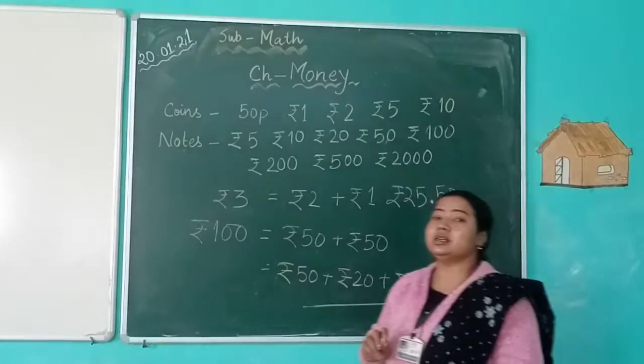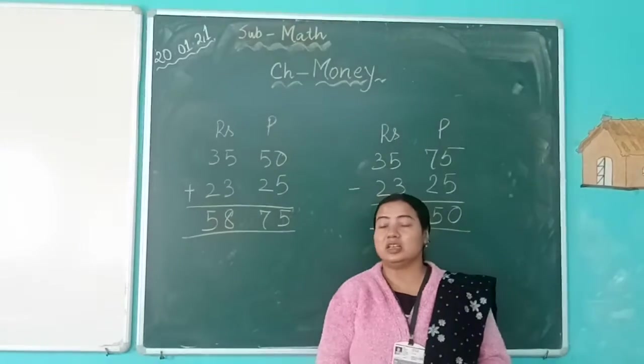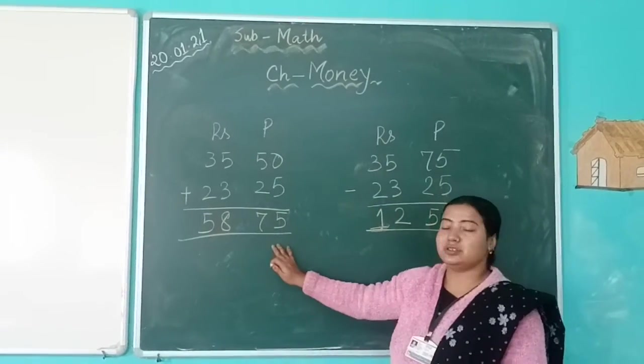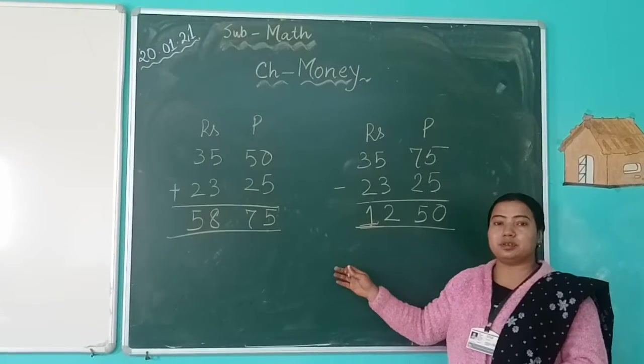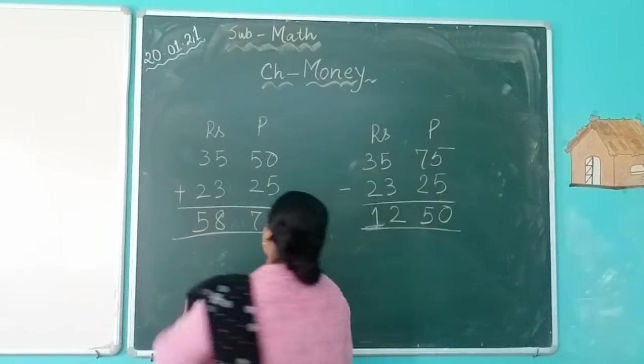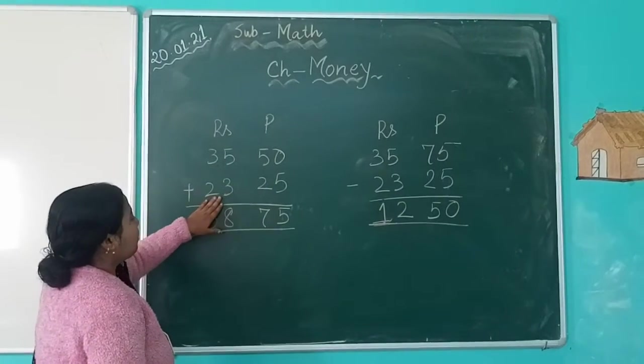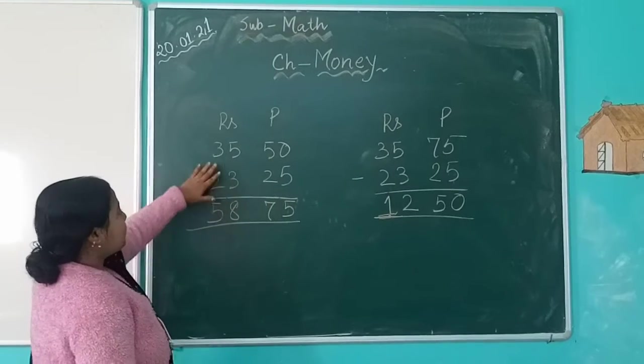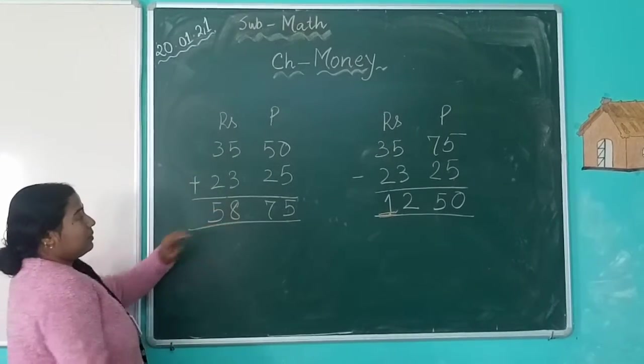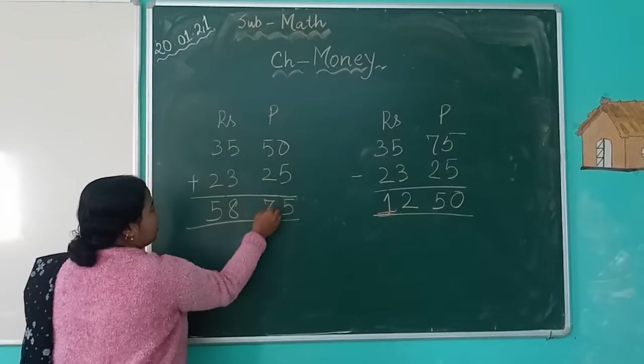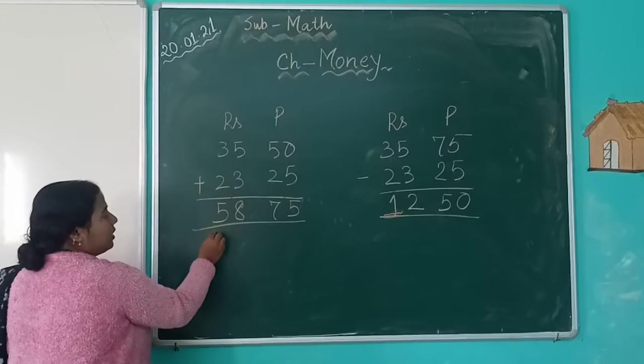Now go through additions of money. This type you'll find in your chapter. Do this addition: 35 rupees 50 paisa plus 23 rupees 25 paisa. You add separately - paisa and rupees separately. 5 plus 2 is 7, 5 plus 3 is 8, 3 plus 2 is 5. So the answer is 58 rupees 75 paisa.